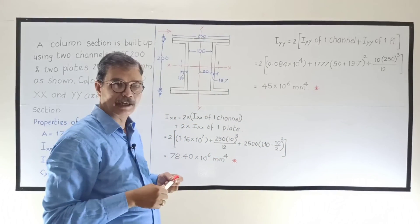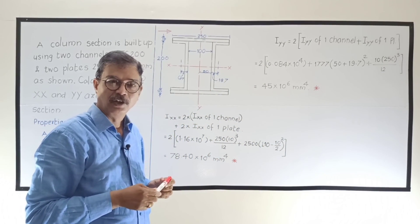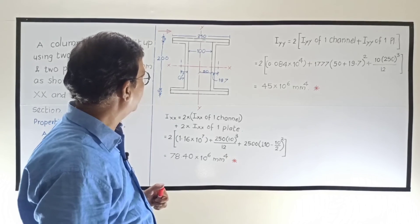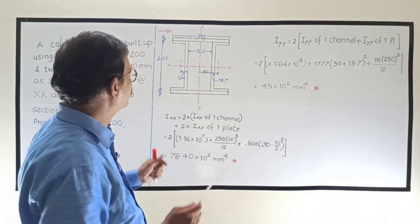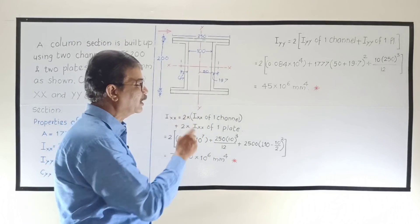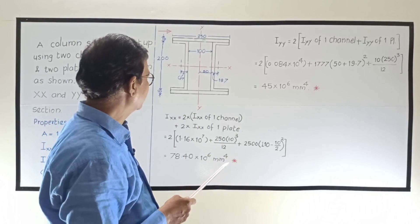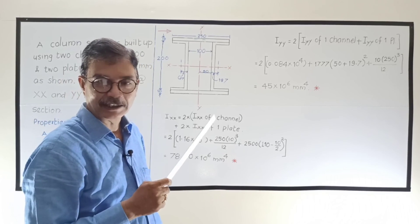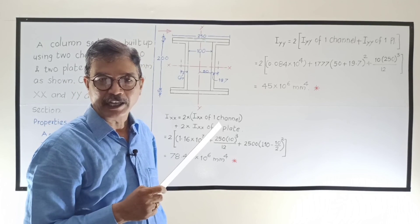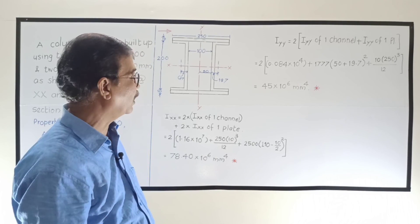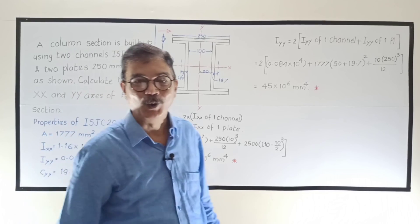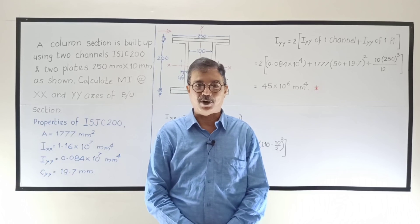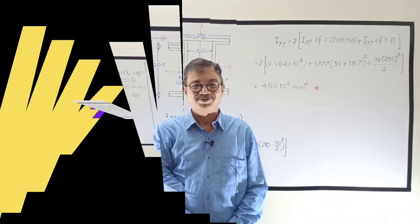Another built-up section can be two angle sections on either side of a gusset plate, or two channels placed back to back — these are the same concept. You have to understand the symmetry of the particular section and accordingly determine where it is necessary to use the parallel axis theorem. Thank you.